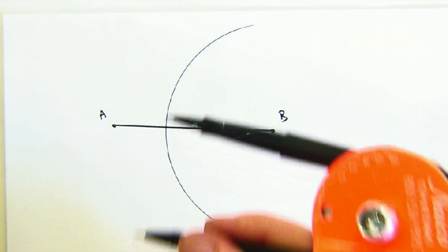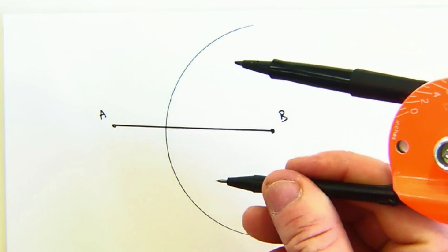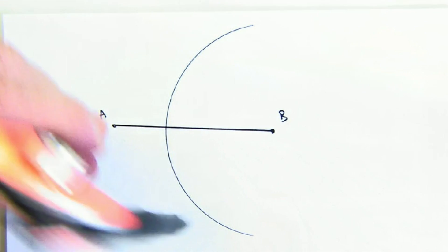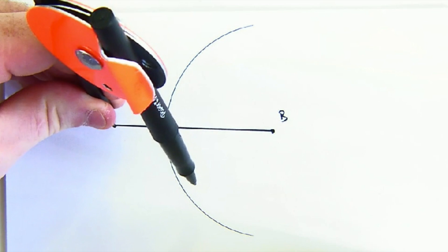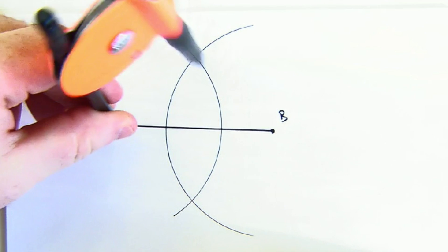Now, without changing the compass length, we're going to keep it the same. In other words, keep our radii the same, and do a second arc.